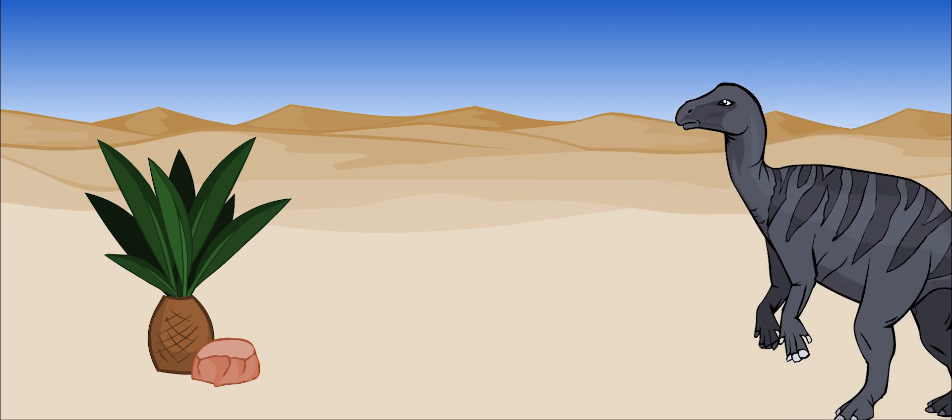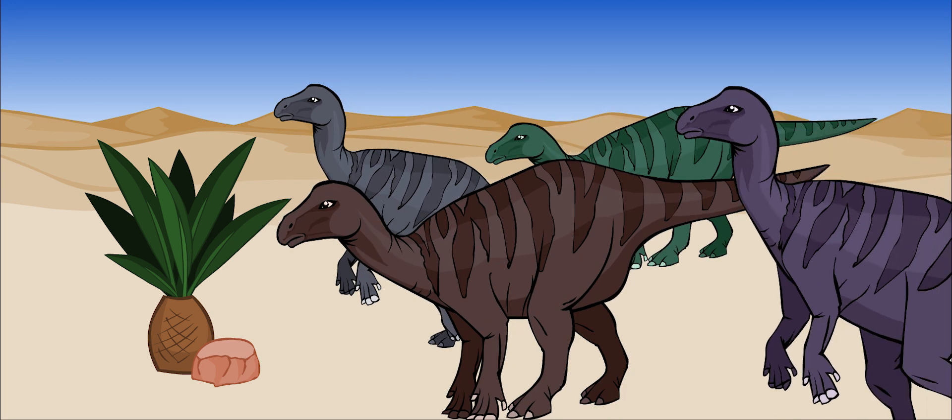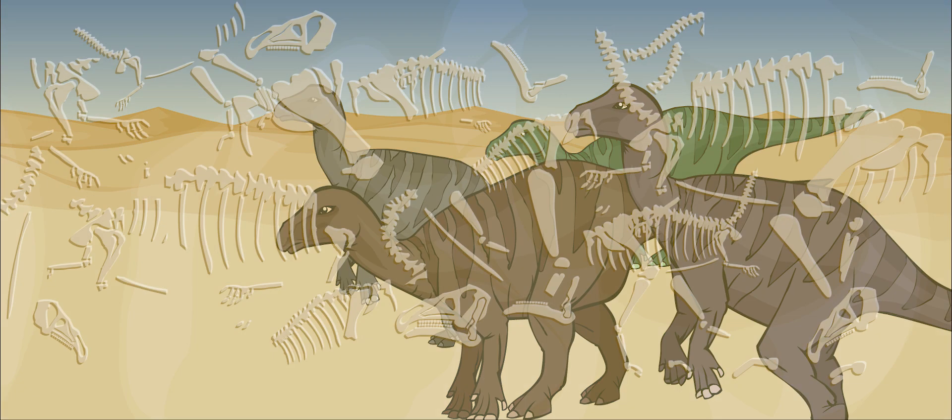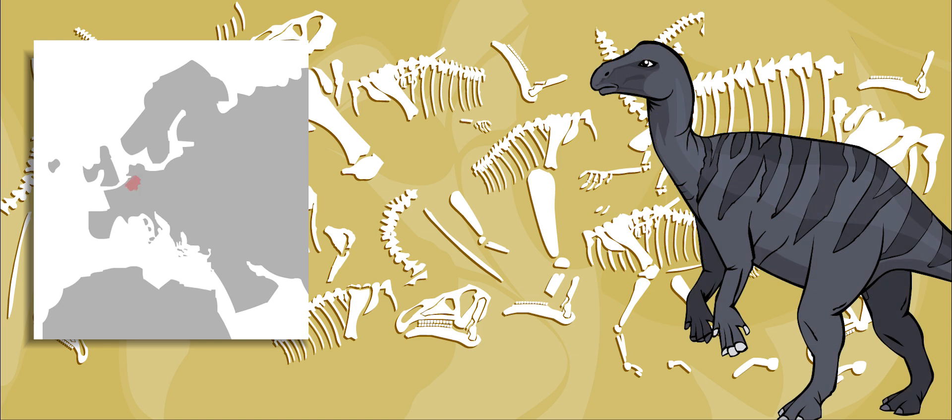Paleontologists believe that Iguanodon traveled in large groups. We know this because about 30 Iguanodon skeletons were found together in a coal mine in Belgium in northern Europe. Among them were bones of adults and younger dinosaurs.